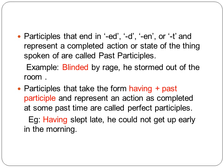Participles that take the form of 'having + past participle' and represent an action completed at some past time are called perfect participles. For example: 'Having slept late, he could not get up early in the morning' — the action of sleeping late was already completed in the past, so 'having slept' is a perfect participle.